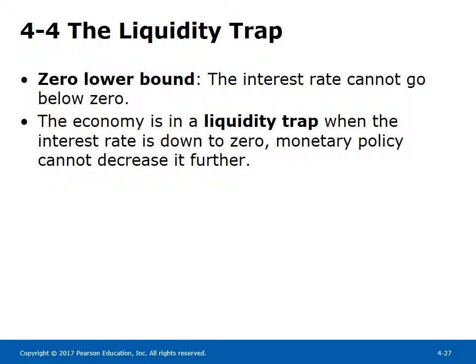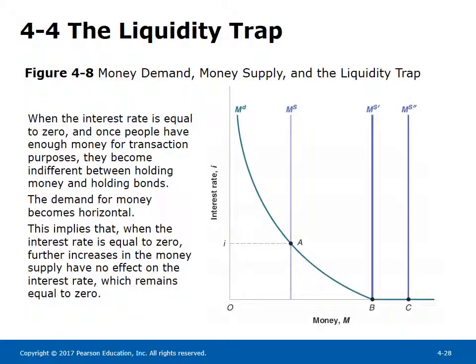The liquidity trap: the zero lower bound means nominal interest rates cannot go below zero. The economy is in a liquidity trap when the interest rate hits zero, since monetary policy cannot decrease it further. Once the interest rate reaches zero, people become indifferent between holding money and holding bonds. The demand for money becomes horizontal. Further increases in the money supply have no effect on the interest rate, which remains at zero.